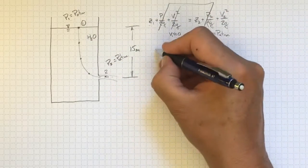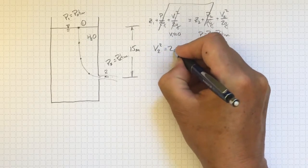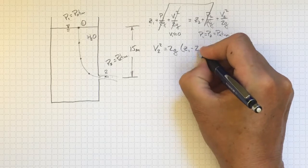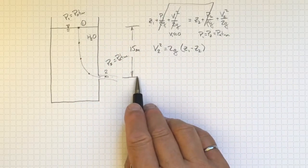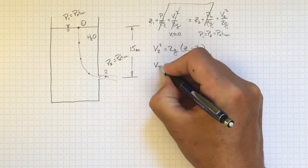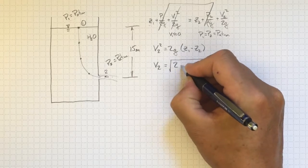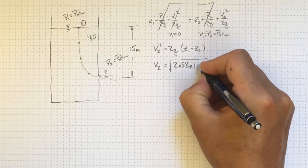So we can rearrange and get that V2 squared is equal to 2G times Z1 minus Z2. And that's going to be the 15 meters elevation difference here that we knew. So V2 equal to the square root of 2 times G, 9.8 times 15 meters.